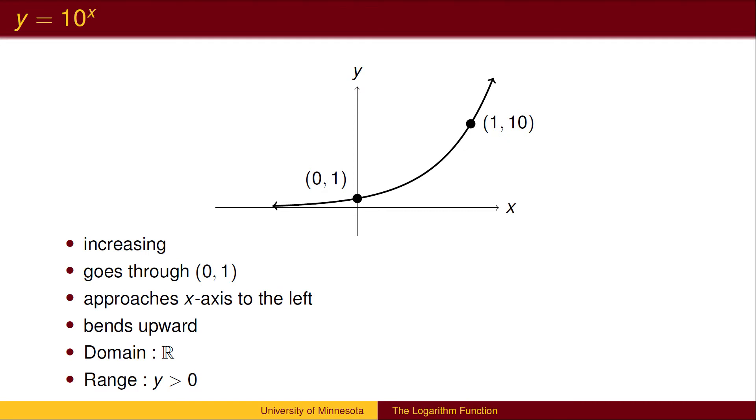The graph of this exponential function increases from left to right, passes through the point 0, 1, is asymptotic to the x-axis on the negative side, bends upward, has all real numbers for its domain, and all positive numbers for its range.